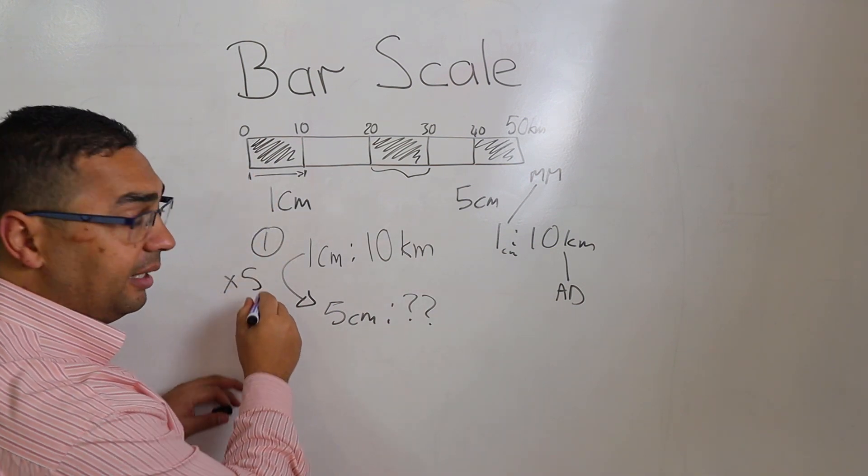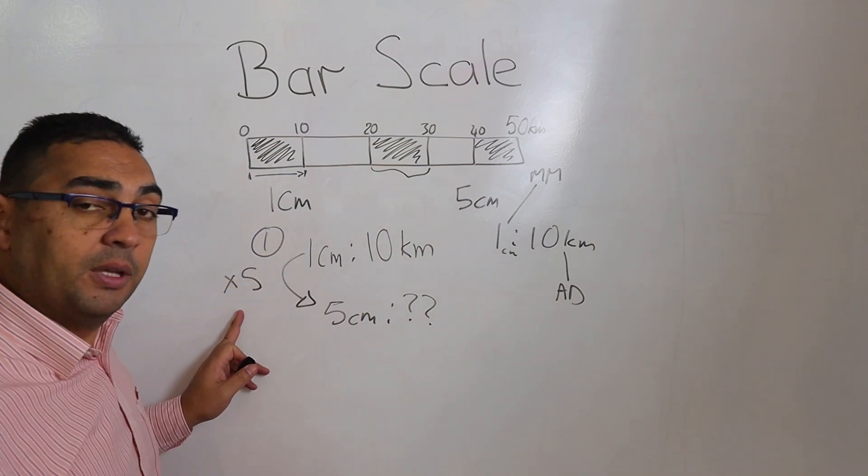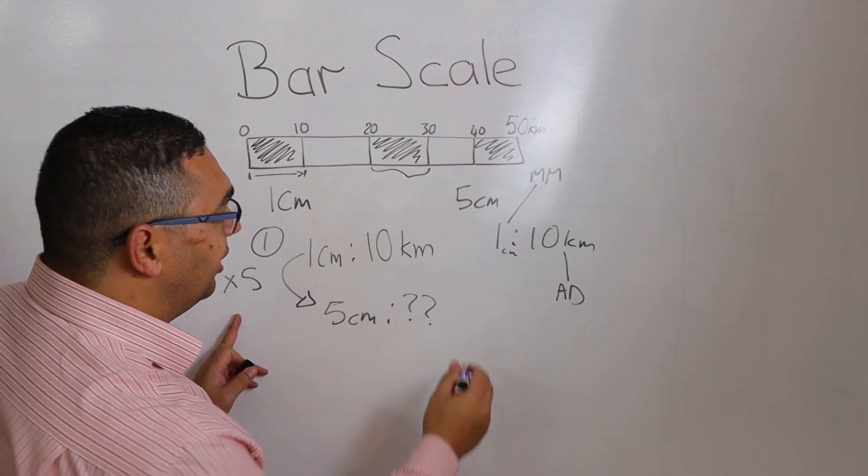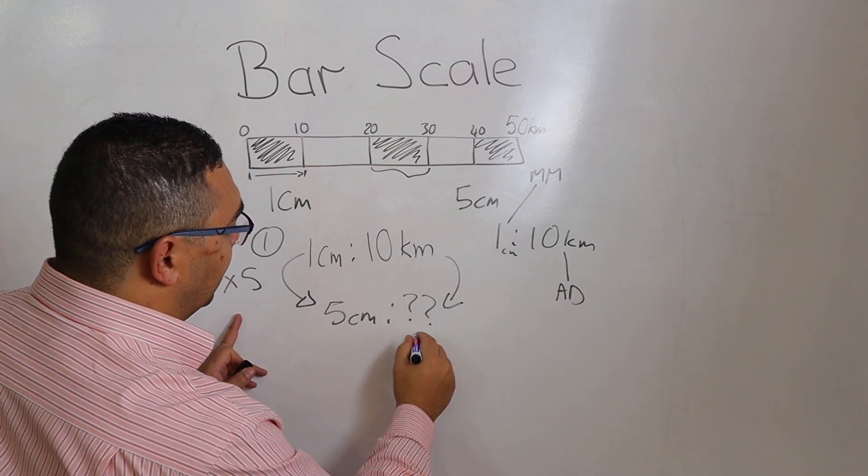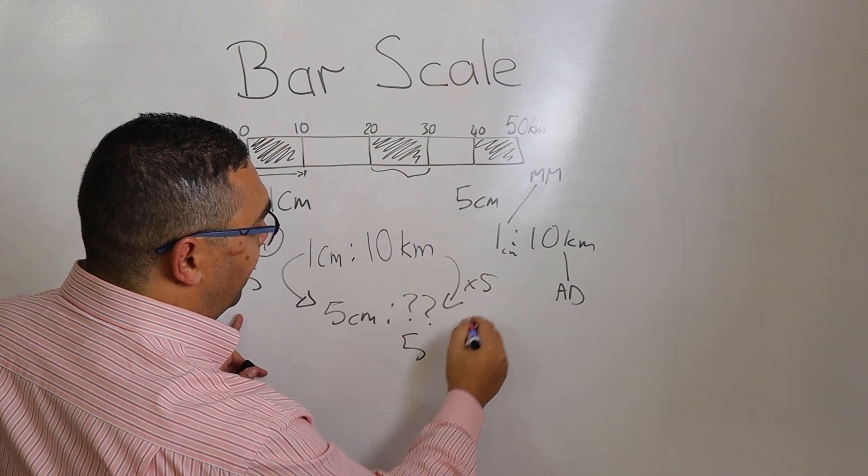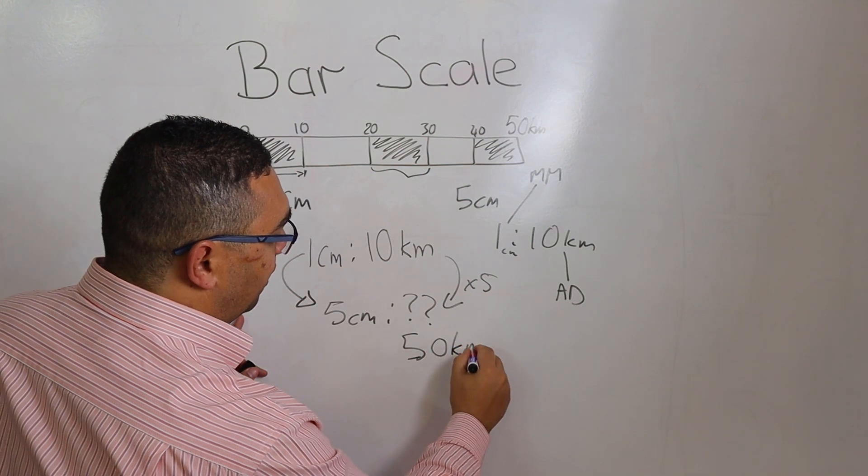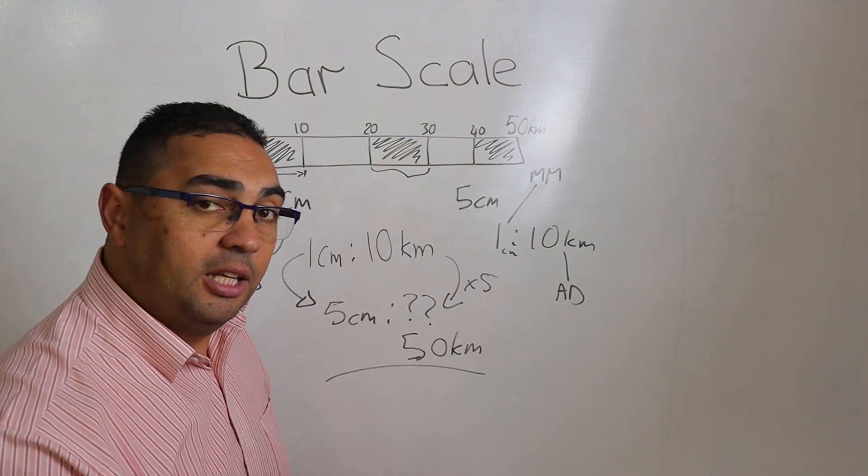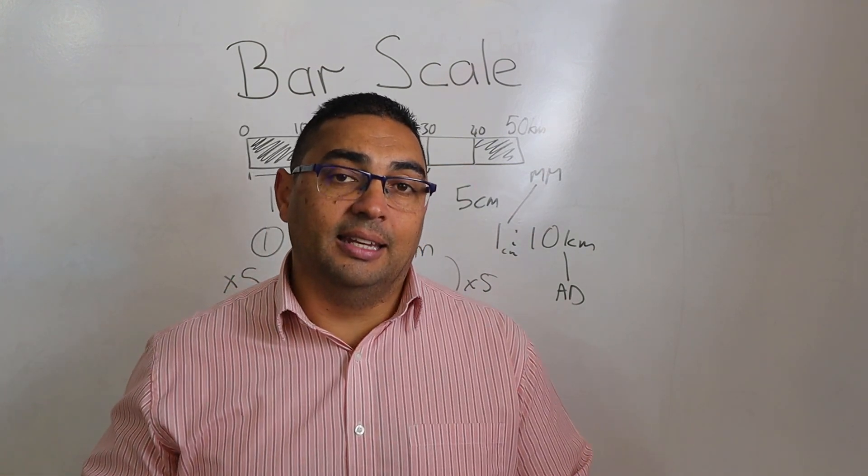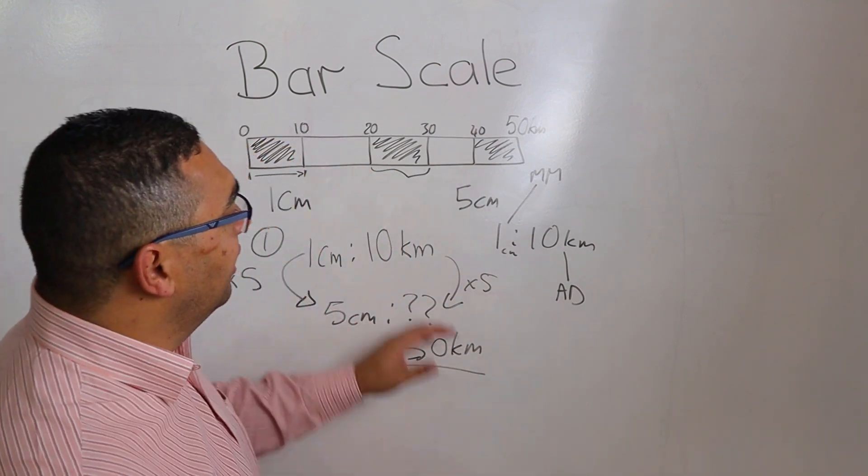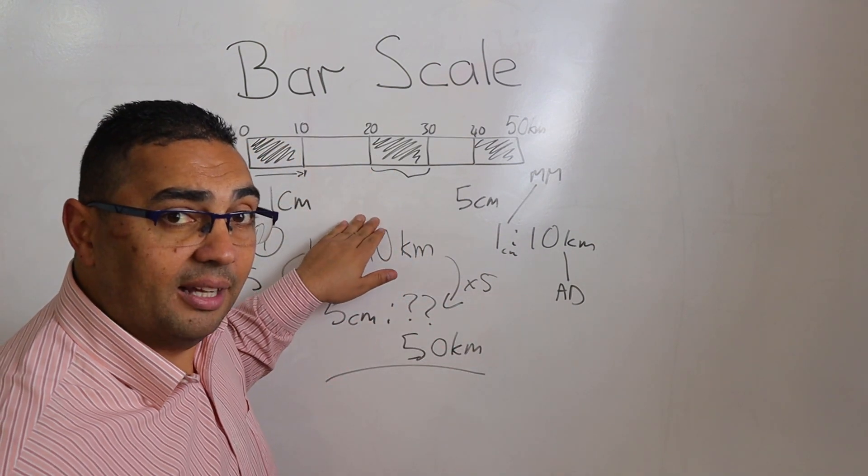So how did I get from 1 centimeter to 5 centimeters? I've multiplied by 5. And what I do to the one side, I have to do to the other side. And what's going to happen when I multiply by 5? I'm going to end up with 50 kilometers. And that then is my actual distance that I've been able to calculate using my bar scale.